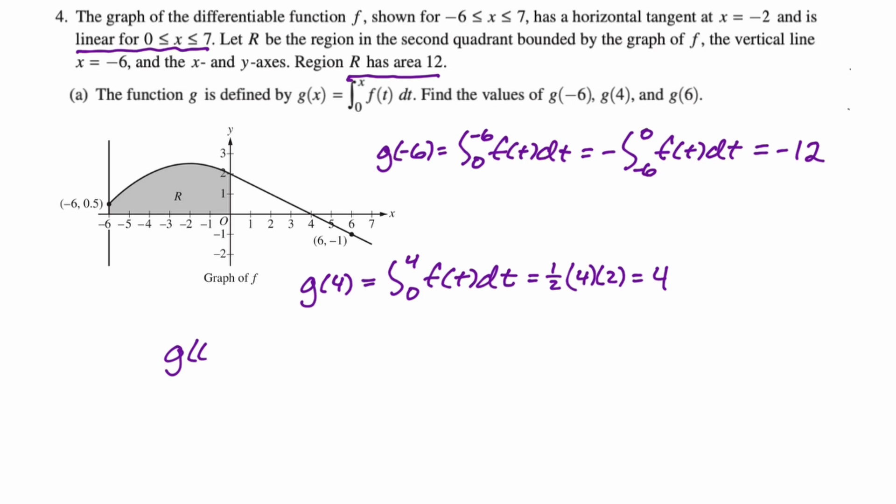And then for g of six, same kind of idea. We're going zero to six f of t dt. The issue here is that sometimes f is above the axis, sometimes below. So we're going to accumulate positive area, and then we're going to lose some negative area. So this we already saw has an area of four. And then this triangle here from four to six is basis two, height is negative one, one half base times height, negative one. So we're going to get four, and then plus negative one. So we get three. So that's part a.